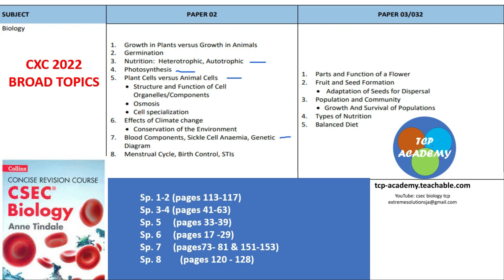I'd encourage persons to study all those genetic diagrams — even those beyond page 153. I do suggest that you look at all of the diagrams there and all the different types of crosses, to include things like inheritance of sex, inheritance of dominance, inheritance of recessiveness, co-dominance, incomplete dominance, sex-linked inheritance, and pedigree charts. I would suggest that you look at them all.